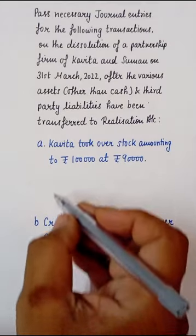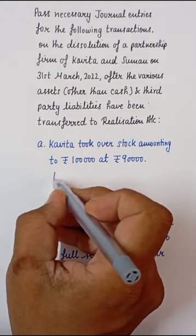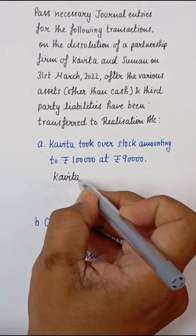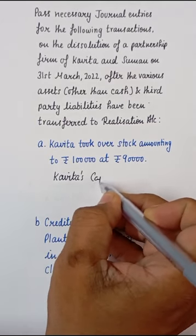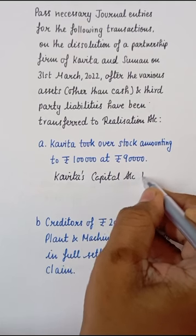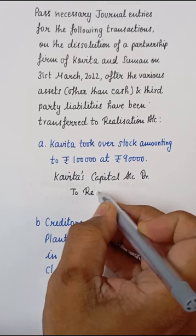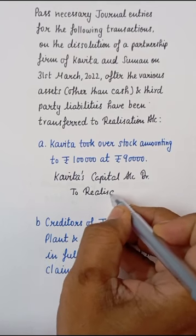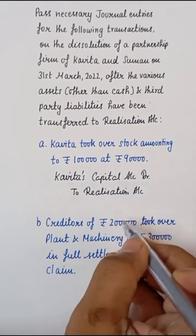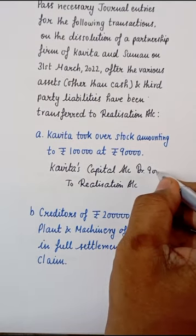अगर यह stock बिक जाता तो entry होती bank to Realization Account, मगर इसको कविता ने लिया है, तो entry बनेगी: Kavitha's Capital Account Debit to Realization Account। और यह entry बनेगी with Rs.90,000।